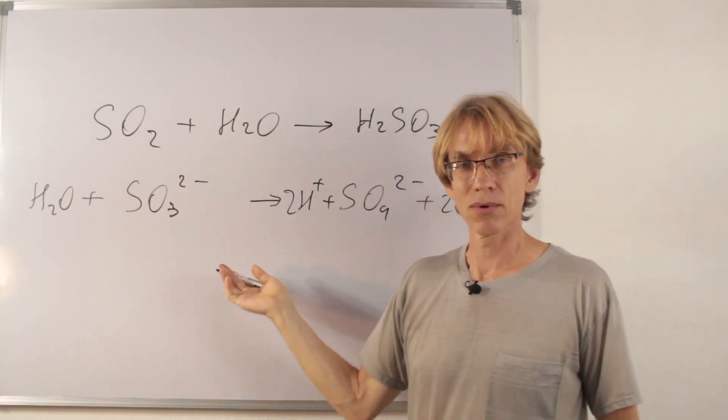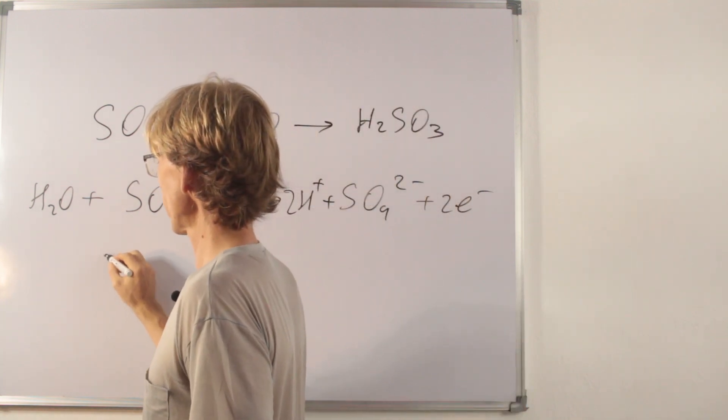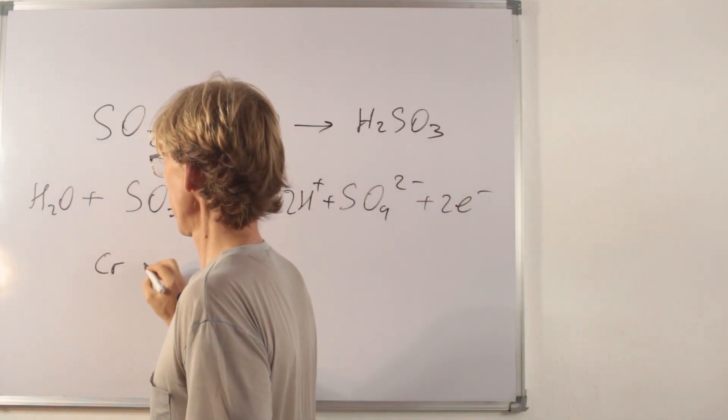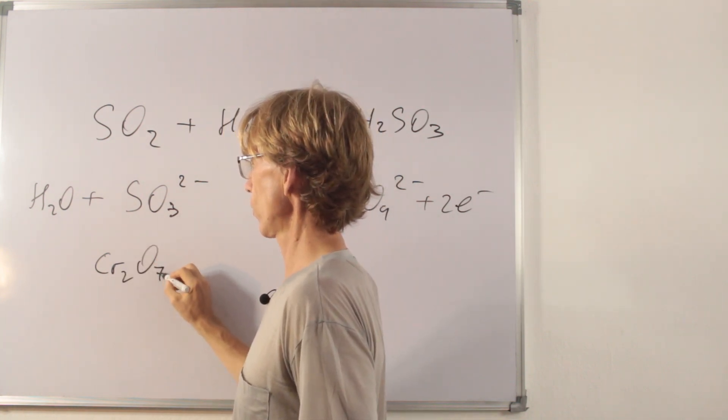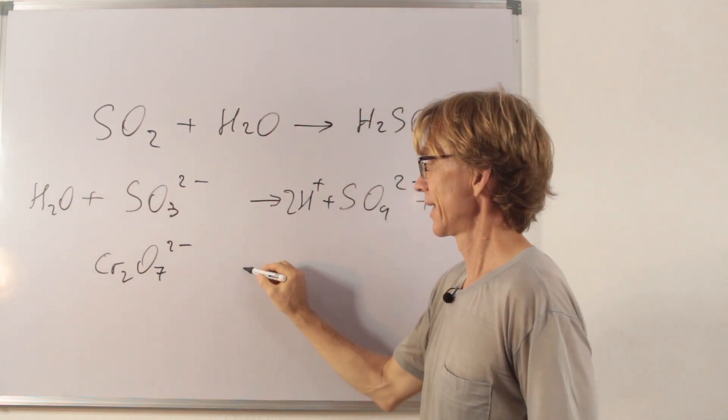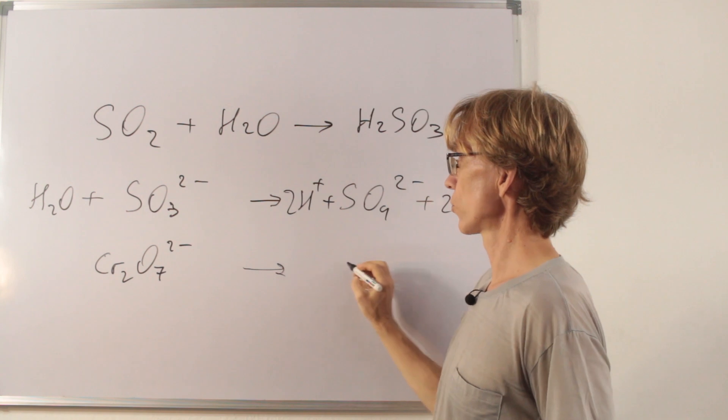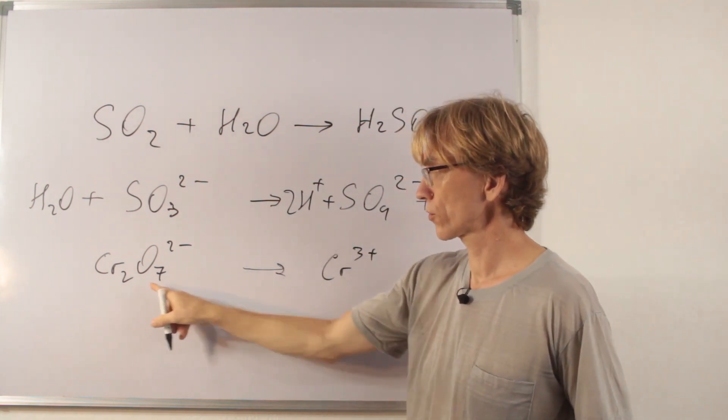And now for oxidizing agent side. Potassium dichromate we used. But the ion which is interesting to us is Cr2O7 2- dichromate ion. So, it is changing into green chromium 3 plus. Orange, green.